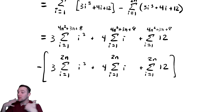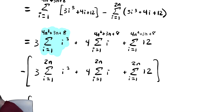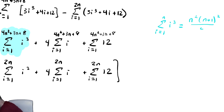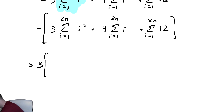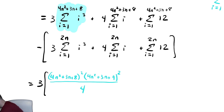Now we use our formulas 6 times, which looks messy, but this will give us a closed form expression. We have 3 times the i-cubed summation formula. The sum from i equals 1 to n of i cubed is n squared times (n plus 1) squared divided by 4. Plugging in the top bound 4n squared plus 3n plus 8, this becomes (4n squared plus 3n plus 8) squared times (4n squared plus 3n plus 9) squared divided by 4.